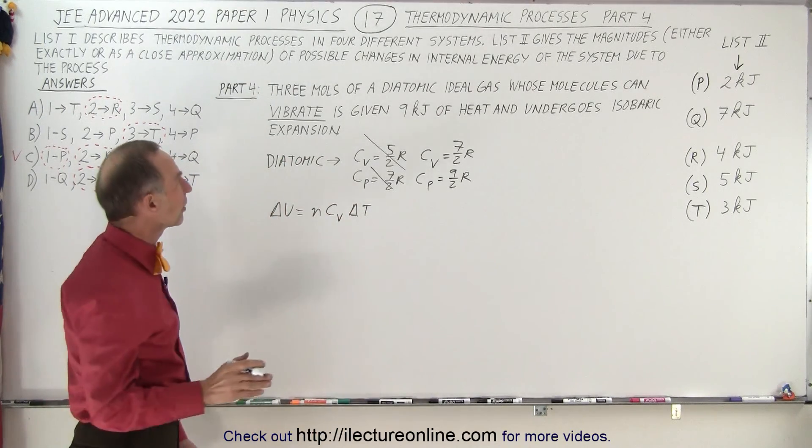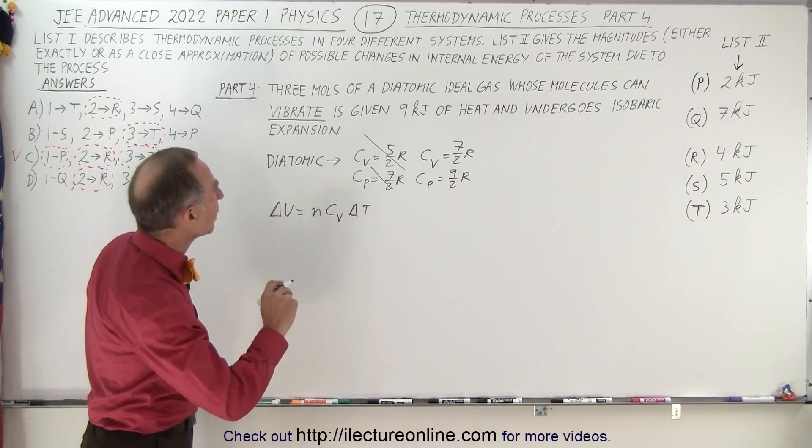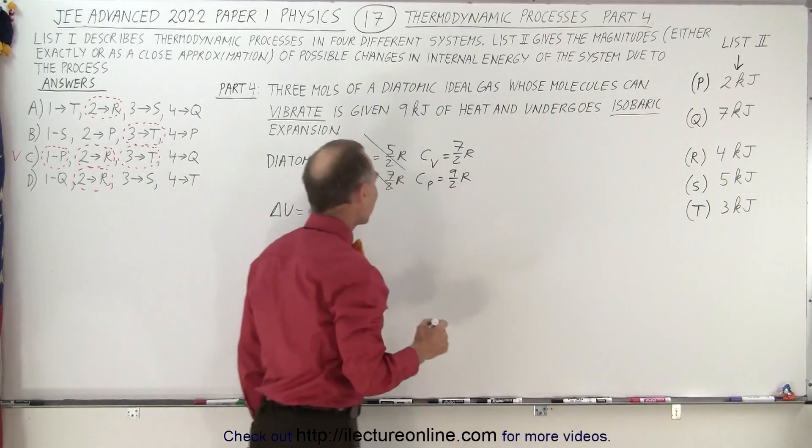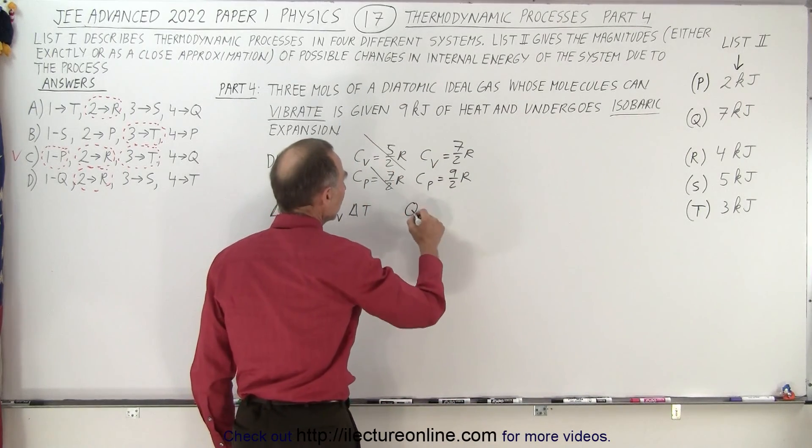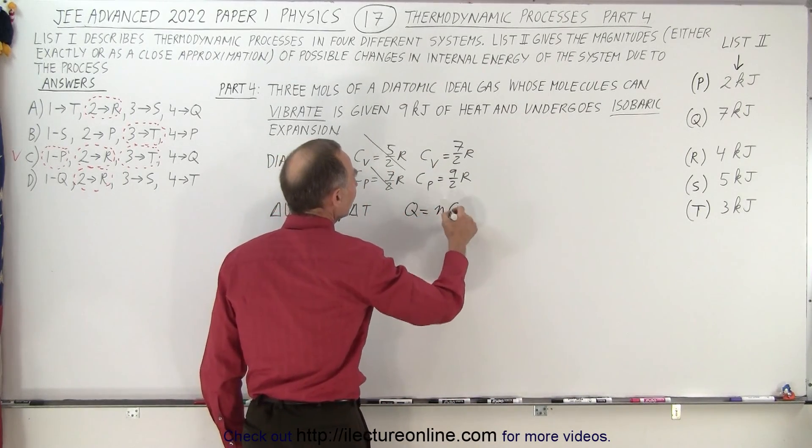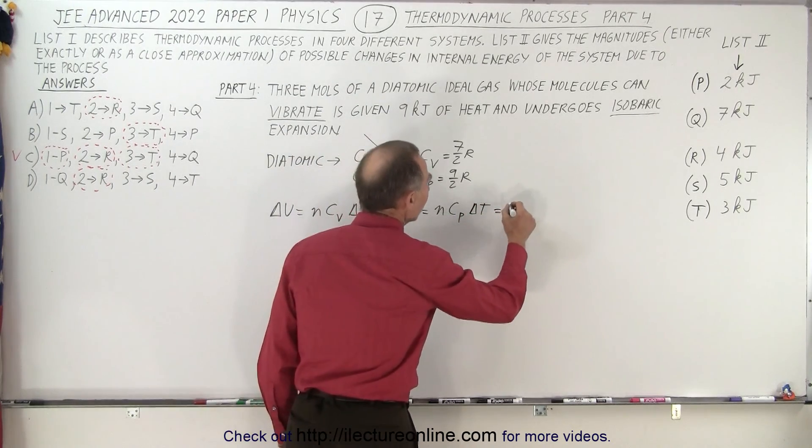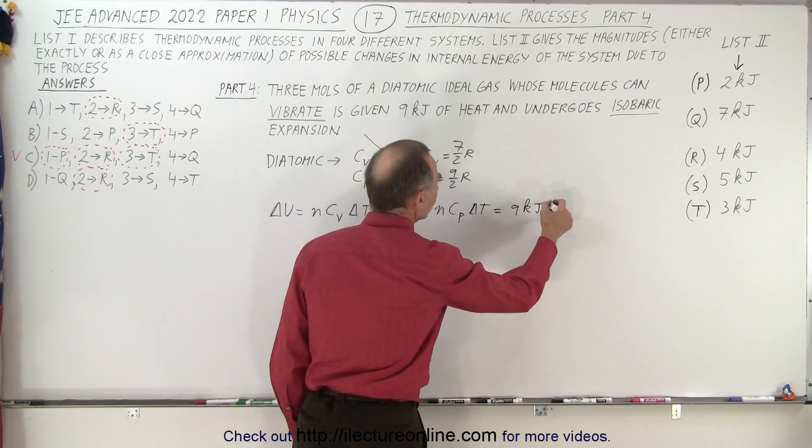But they do tell us that it is an adiabatic, no not adiabatic, an isobaric process, and for an isobaric process heat added Q is equal to N C sub P delta T. And we know that this is equal to nine kilojoules.